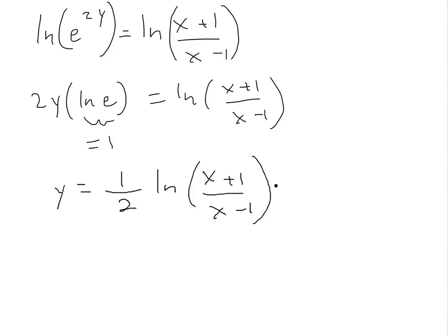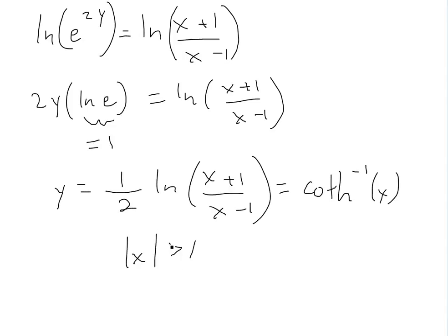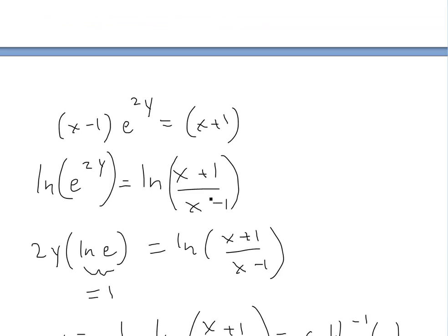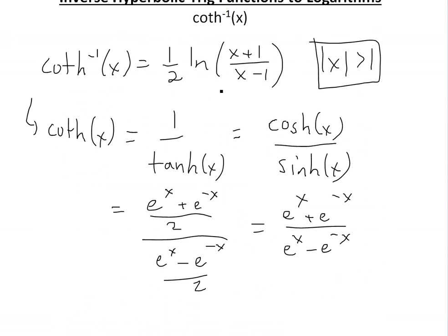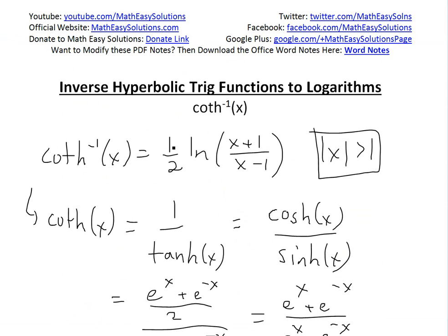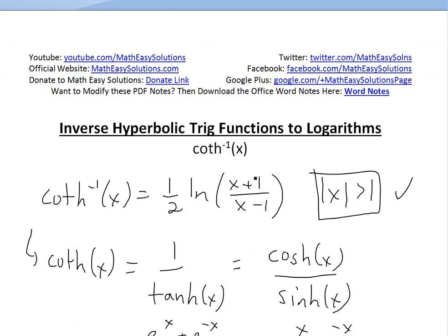We've converted y — which equals the inverse hyperbolic cotangent of x — and shown the domain is for the absolute value of x greater than 1. This is exactly what we wanted to prove. Thanks for watching. Remember, you can download these exact notes using the Dropbox link. Stay tuned for another Math Easy Solution — see you next time.